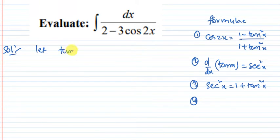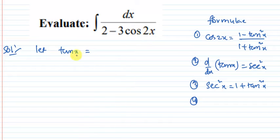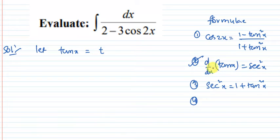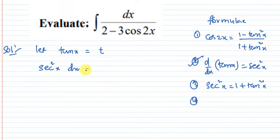So the problem involves sine x, sine 2x, cos x, cos 2x. For this problem, let tan x equal to t. The derivative: d/dx of tan x equals secant squared x, so differentiating tan x gives secant squared x dx equal to dt.